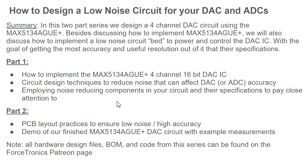This video series has two focuses: first, how to implement the MAX5134 4-Channel DAC IC, which we covered a lot in part one following the data sheet closely. Second, how to create a low noise circuit bed for our DAC IC to ensure we're getting the best accuracy and most useful resolution. In part one we talked about DAC implementation and low noise schematic techniques. In part two we'll focus on demos and PCB layout practices for low noise and high accuracy.